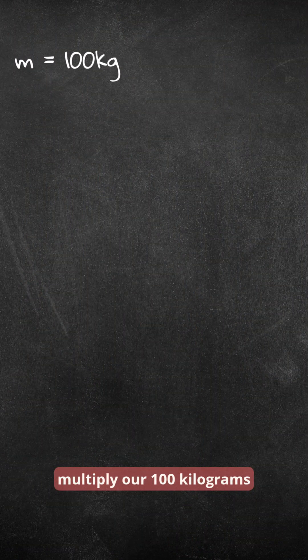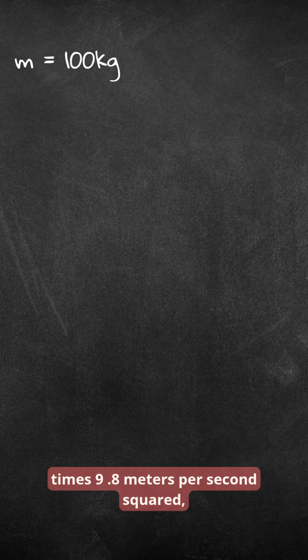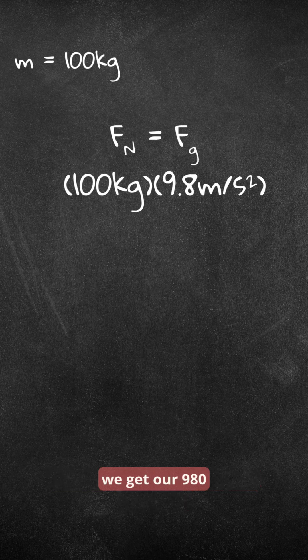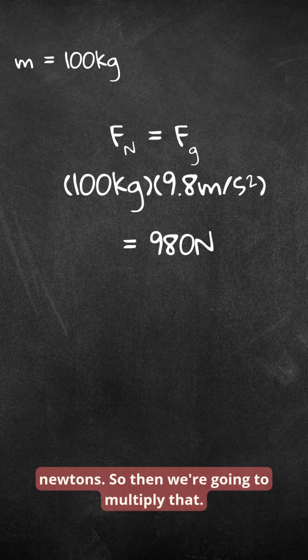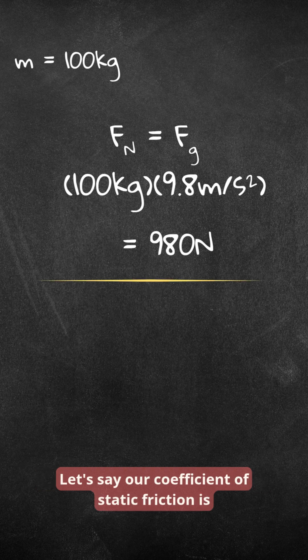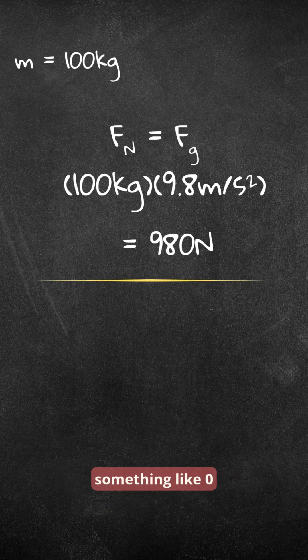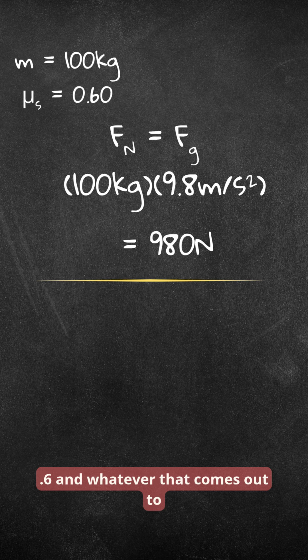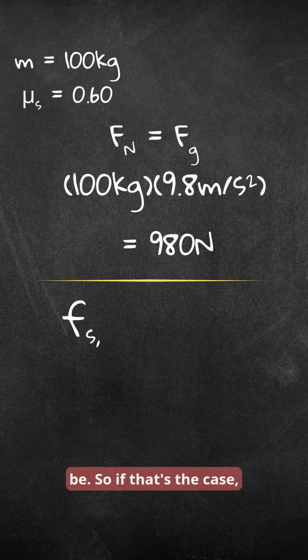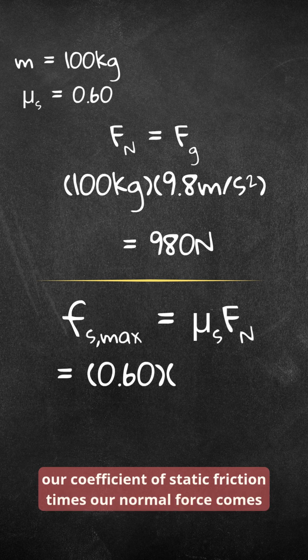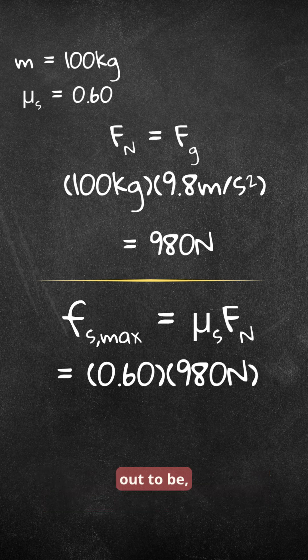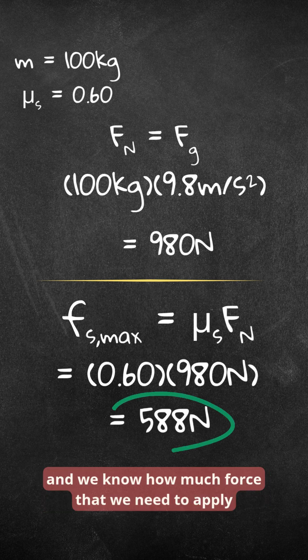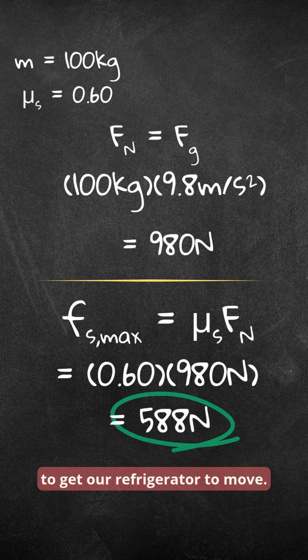So if we multiply our 100 kilograms times 9.8 meters per second squared, we get 980 newtons. Then we're going to multiply that — let's say our coefficient of static friction is something like 0.6 — and whatever that comes out to be, our coefficient of static friction times our normal force gives us the answer. And we know how much force we need to apply to get our refrigerator to move.